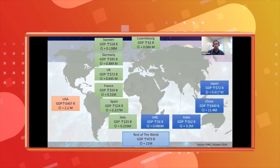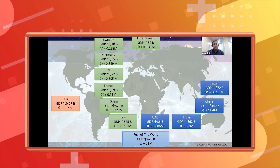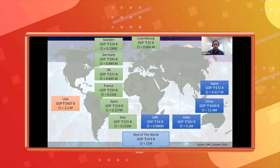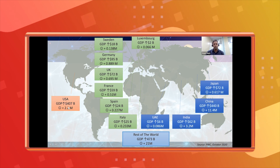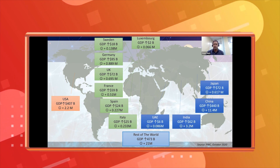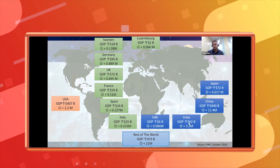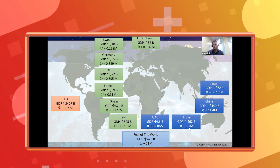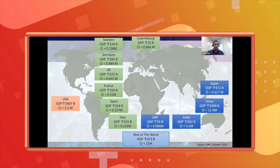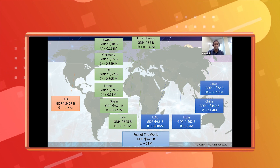In terms of country-wise comparison of jobs and GDP rise from blockchain: for the USA it's a 407 billion dollar GDP hike and 2.2 million new jobs. For India, the expected hike is around 62 billion dollars in GDP rise, and around 3.2 million new jobs. This figure will likely be even higher considering the many remote opportunities that Indians work on which aren't counted in the research.